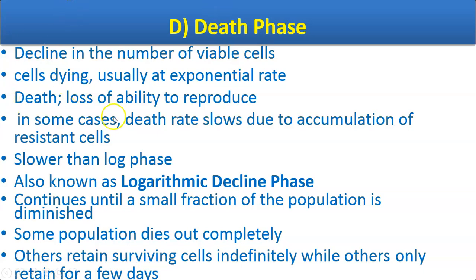In some cases the death rate slows due to the accumulation of resistant bacterial cells. Because some bacteria are resistant, the death rate slows and is slower than in the log phase. This phase is called logarithmic decline phase because the death of cells occurs in a logarithmic manner. The death phase continues until a small fraction of the population remains — some populations die out completely while others retain surviving cells for days.